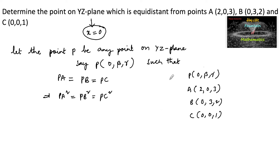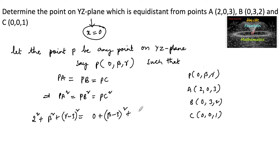Using the distance formula: PA² = 2² + β² + (γ − 3)², PB² = (β − 3)² + (γ − 2)², and PC² = β² + (γ − 1)².